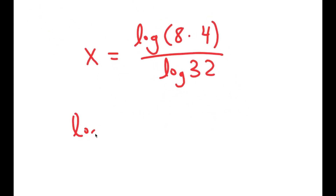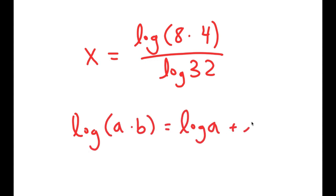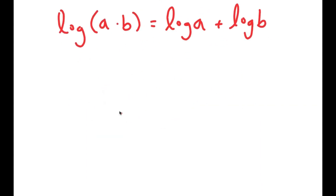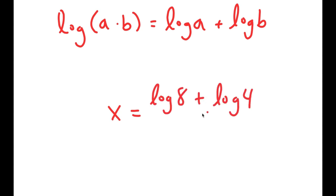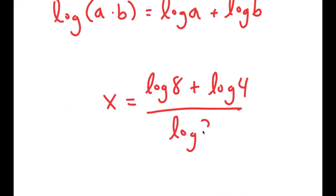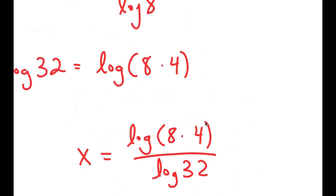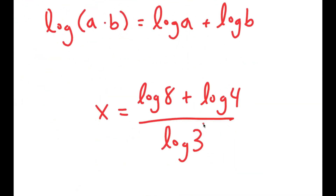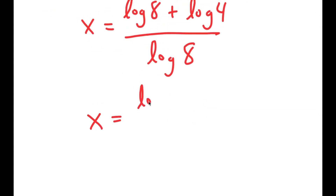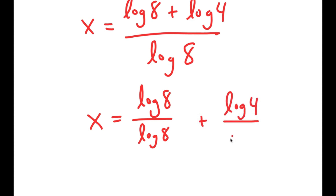If I have something in the form log of a times b, this is equal to log a plus log b. So in this case, this is going to equal log of 8 plus log of 4, and I have this over log of 8. This turns into log 8 over log 8 plus log 4 over log 8.